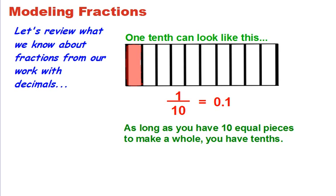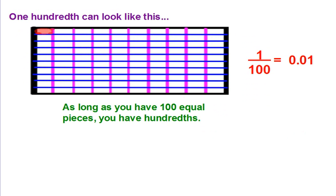As long as you have 10 equal pieces, you have tenths. 1 hundredth can look like this — that would be 1 hundredth, 1 over 100, or 0.01 is 1 hundredth.